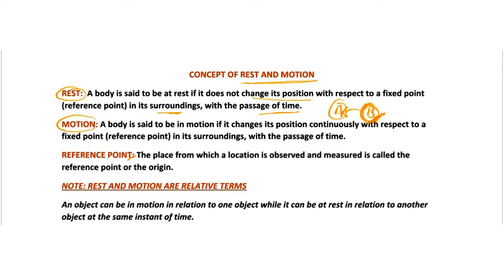Next is motion. Taking the same example — if body B changes its position and shifts to this point, then body B changes its position with respect to its surroundings and with respect to time, and we can say the body is in motion. A is the reference point for body B. The reference point is the place from which a location is observed and measured. So the position of B is measured from point A, meaning A acts as the reference point.